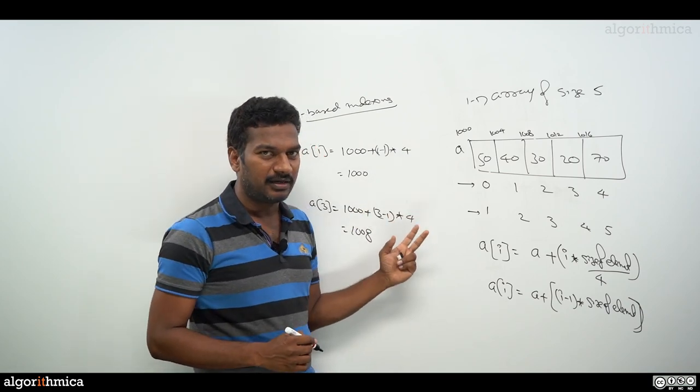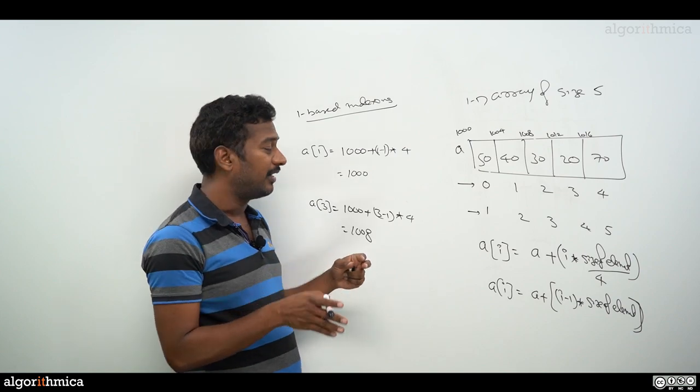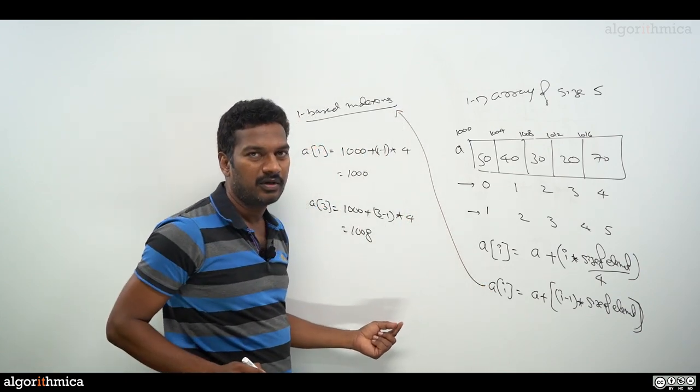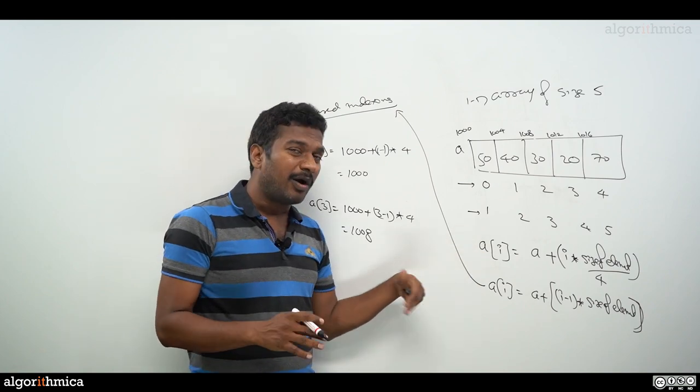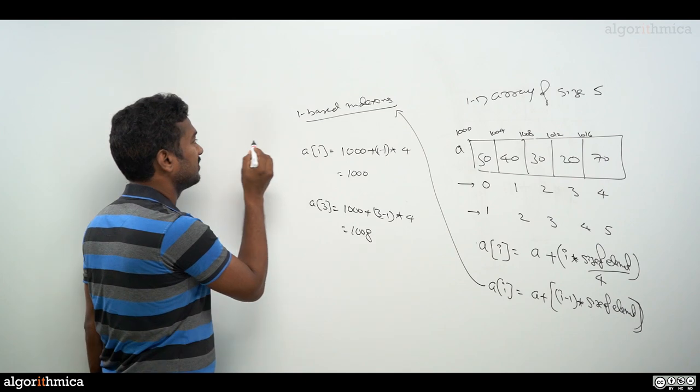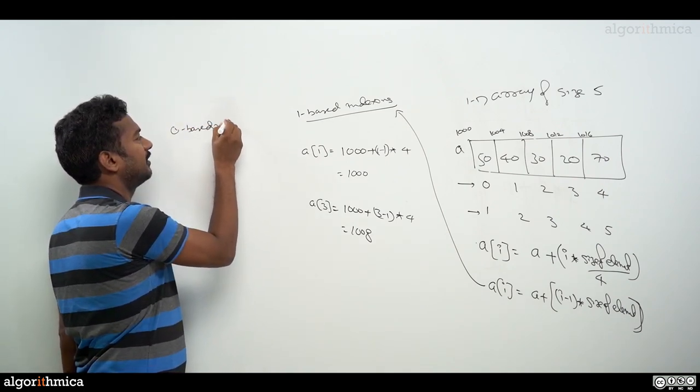Like this, any element in one-based indexing system, I can get the exact address by using this specific expression. But what if I use zero-based indexing? Let me write this as zero-based indexing.